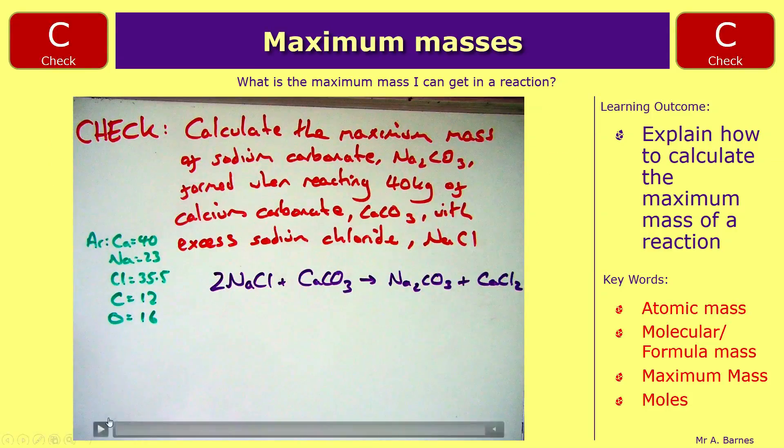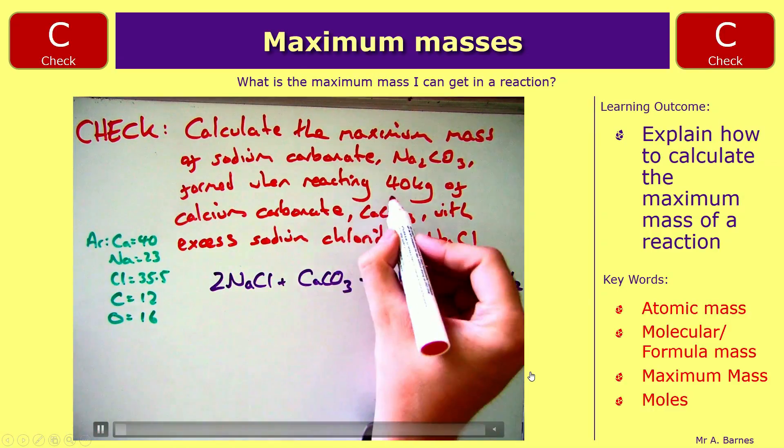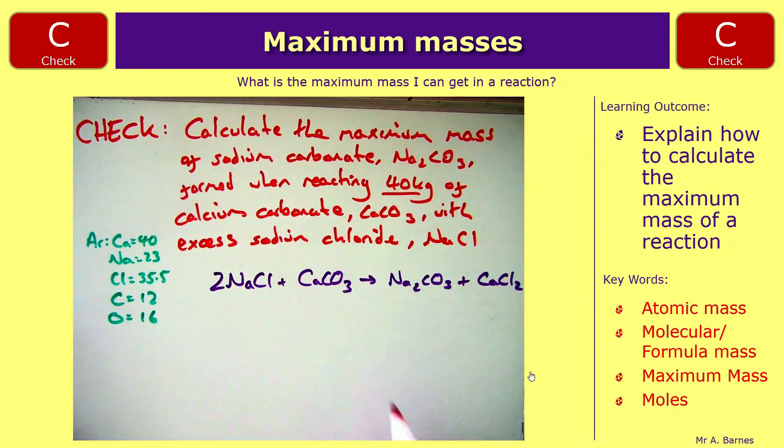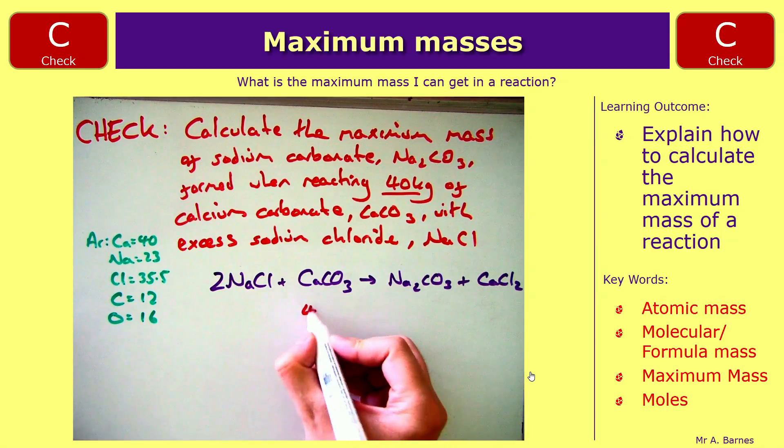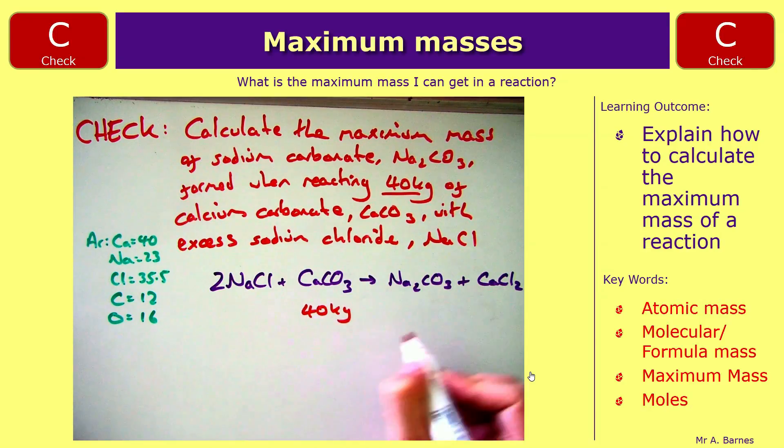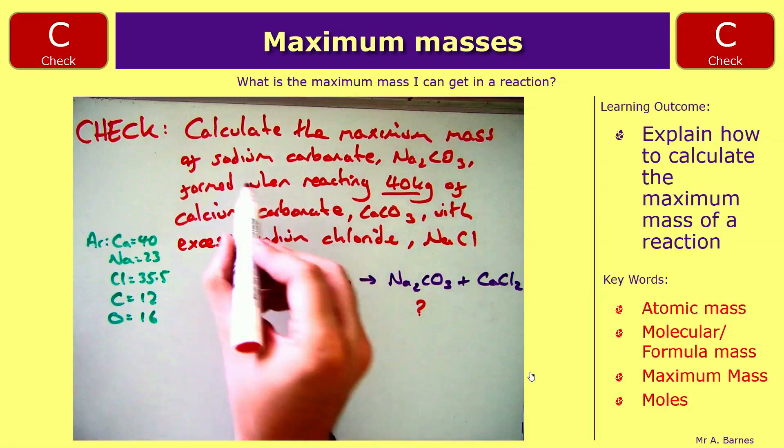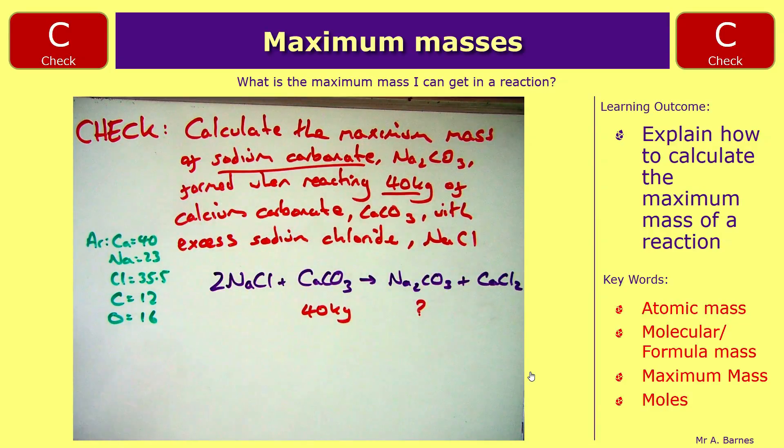Okay, let's go through then. So the very first step then is to put in what you know. So 40 kilograms of calcium carbonate, let's put that below there. And I want to know my sodium carbonate. The second step is to put in the molecular masses for both of them.